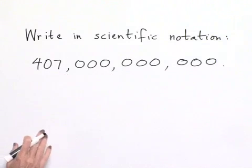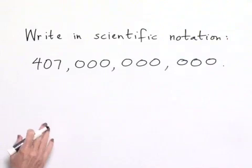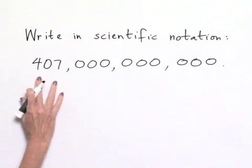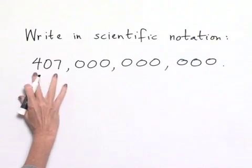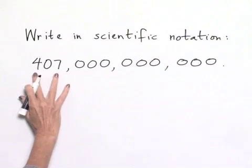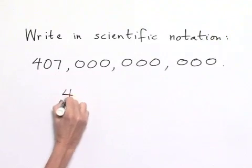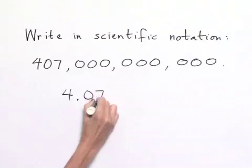We want to write it in scientific notation, which recall means that we need our significant digits as a number between 1 and 10. Our significant digits are 407. To write that as a number between 1 and 10, we write it as 4.07.